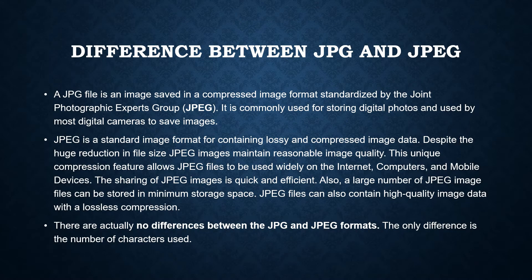A JPEG file is an image saved in a compressed image format, standardized by the Joint Photographic Experts Group, short for JPEG. It is commonly used for storing digital photos and used by most digital cameras to save images. JPEG is a standard image format for containing lossy and compressed image data. Despite the huge reduction in file size, JPEG images maintain reasonably good image quality. This compression feature allows JPEG files to be used widely on the internet, computers, and mobile devices.